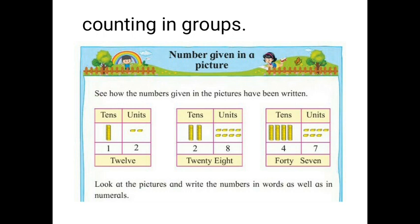In the next one, how many groups in tens? There are two groups. Two groups of tens means 20 objects. And how many single objects in units? There are 8. So 2 and 8 is 28. In the next, how many groups in tens? There are four groups, and single objects in units there are seven, so 4 and 7 is 47.